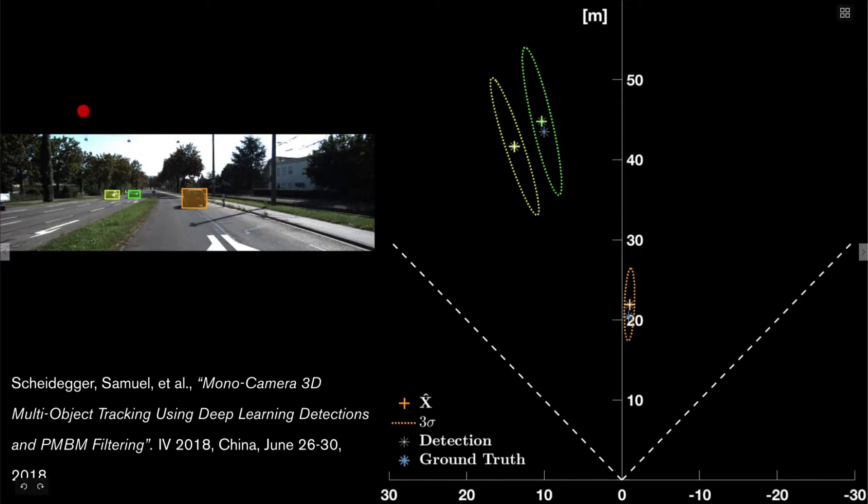So what we will see to the left is the original image, where the bounding boxes of the detected vehicles are shown in separate colors. To the right is a bird's eye view of the situation, centered at the camera. The detection from the camera is shown as white stars, and the result of our filter is shown as these colored ellipses, with the same color as the bounding boxes in the image, and the plus in the middle indicates our estimated position.